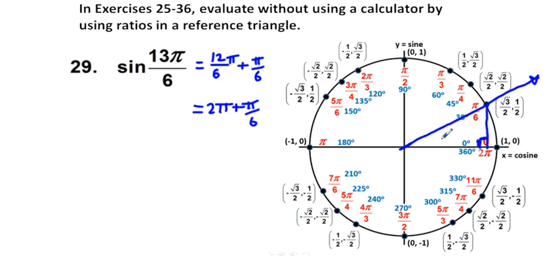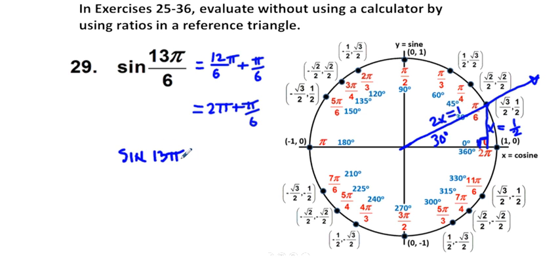Remembering the 30-60-90 triangle, we have the hypotenuse 2x equals 1, so x equals 1/2. The sine of 13π/6 is the same as the sine of π/6, which equals 1/2.